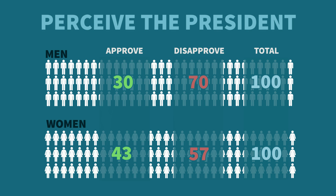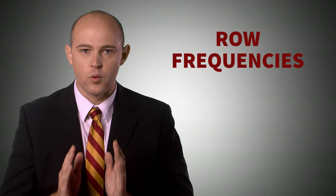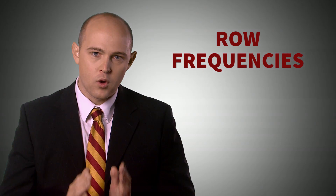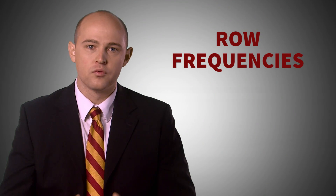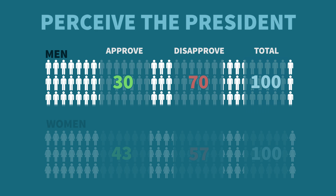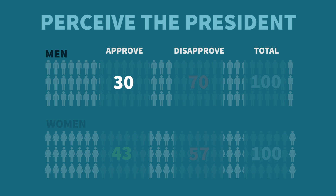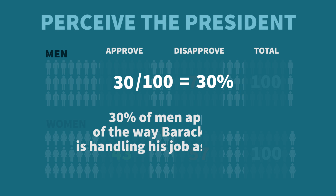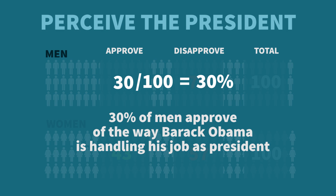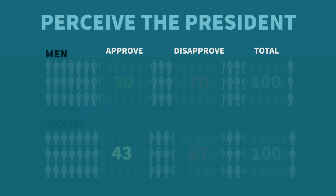Let's focus on one additional step: within-row relative frequencies, or row frequencies for short. We calculate row frequencies by dividing the number in a cell by the total for that cell's row. For instance, if 30 men approved out of 100 men total, that cell's row frequency would be 30%. Now we have a valuable number to put into a sentence: 30% of men approve of the way Barack Obama is handling his job as president. The same can be done for every cell within the table.